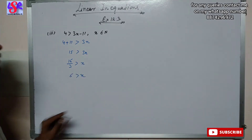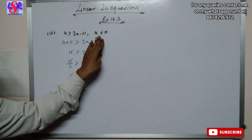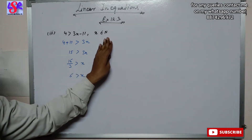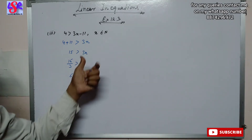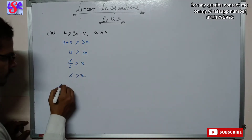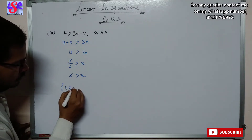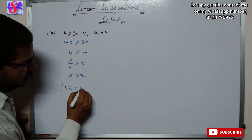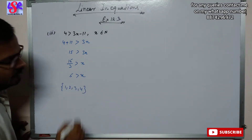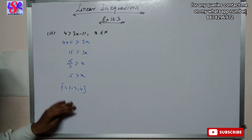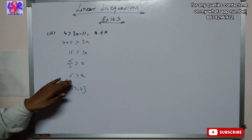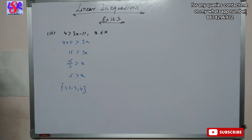It has been given that x is the element of natural number, so natural number starts from 1. The answer will be 1, 2, 3 and 4. Note that 5 will not be included as x is less than 5.